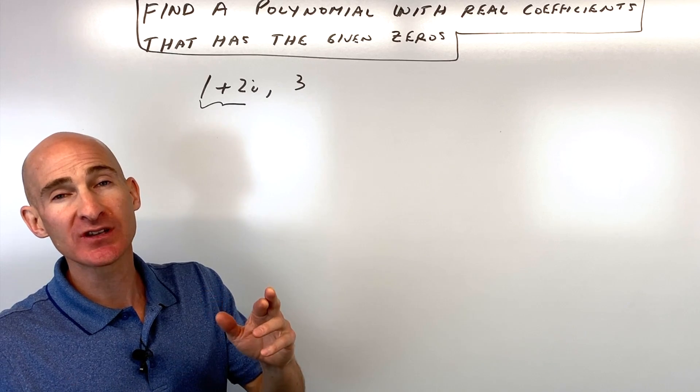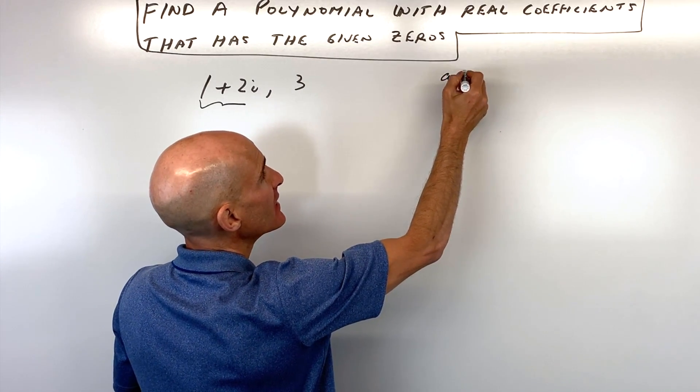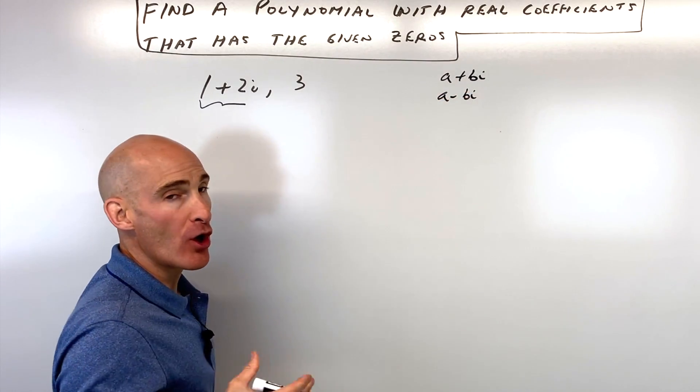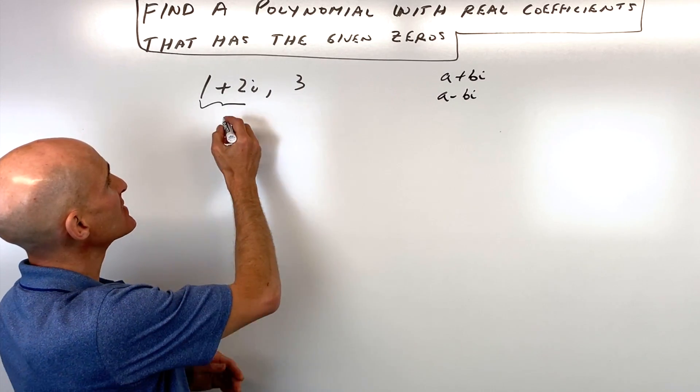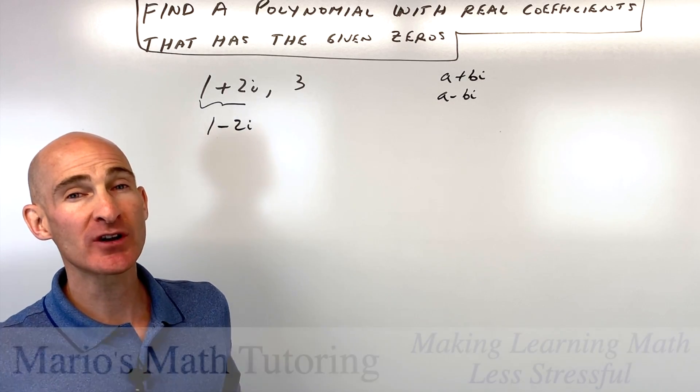you have to realize that those solutions come as conjugate pairs. What I mean by that is imaginary numbers are in this form, a plus bi, a minus bi will also be zero. So these come together. So if one plus two i is a zero, we're also going to have one minus two i. So that's part of the trick of this question.